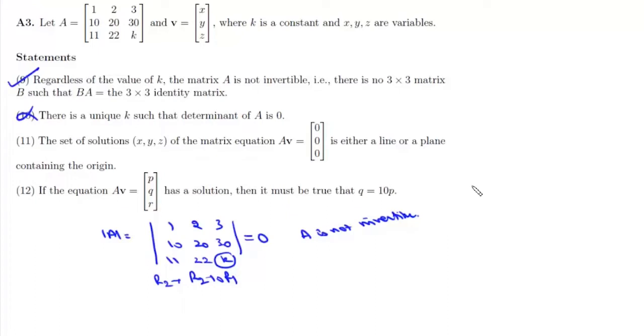Statement 11 gives us the matrix equation AB equals [0, 0, 0]. This is basically a system of homogeneous equations. In this case, the determinant of A equals 0, which means it will have non-trivial solutions or infinite solutions.